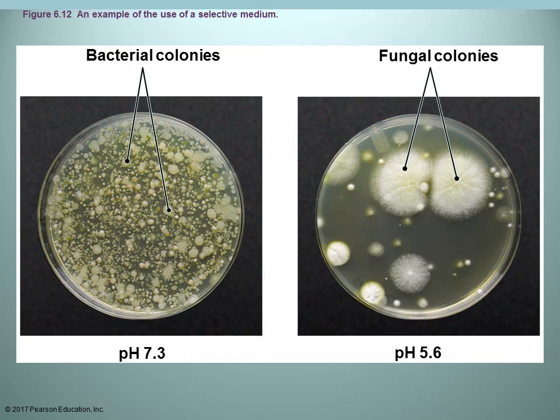Selective media, as the name implies, selects for the growth of some organisms while inhibiting the growth of others. An example is adjusting pH: bacteria prefer neutral to slightly alkaline, while fungi prefer more acidic conditions. At pH 7.3, you see a lot of bacteria growing but no fungi; at pH 5.6, you see different types of fungi growing but no bacteria. That is selective media.